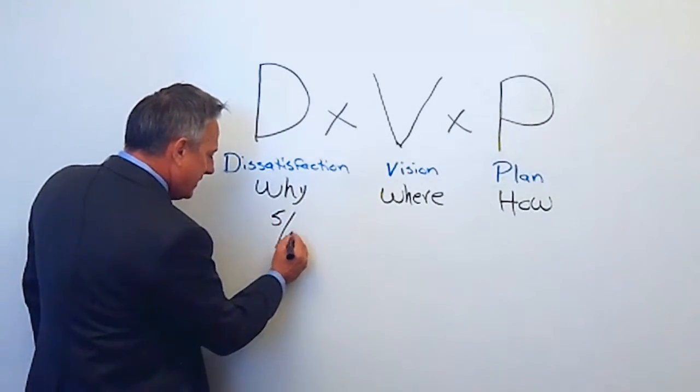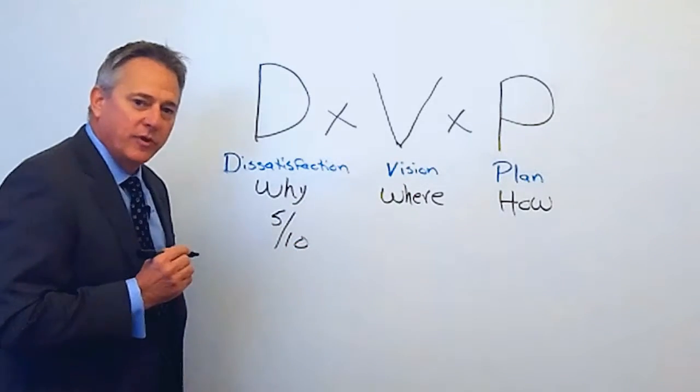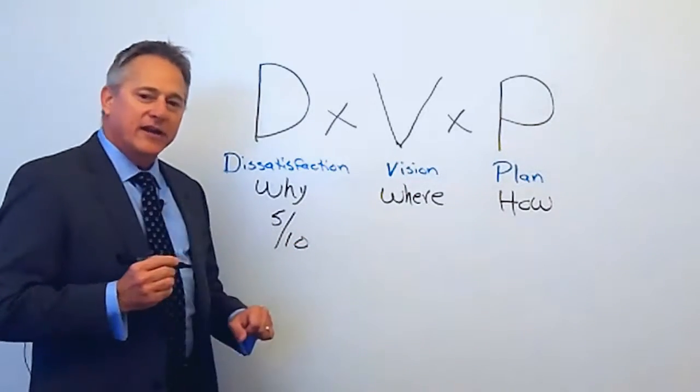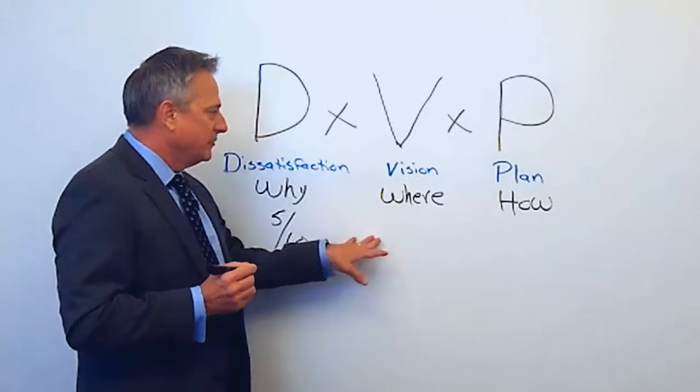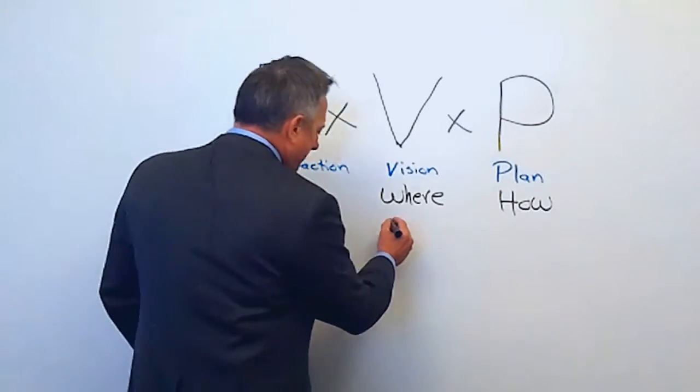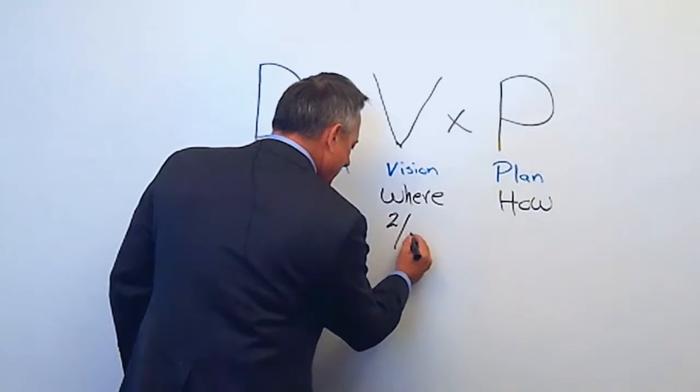Let's just assume that you're not that dissatisfied with where the company is right now, so a five out of ten. If you're not that dissatisfied with where the company is now, you probably don't have a clear vision of where the company is going to be. So let's just say that's a two out of ten.